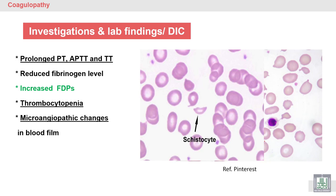Investigations of DIC include laboratory coagulation tests — all coagulation tests are prolonged, including PT and TT. There is a reduction in coagulation factors such as fibrinogen level due to consumption of coagulation factors. Fibrin degradation products (FDPs) are increased because of increased fibrinolysis.